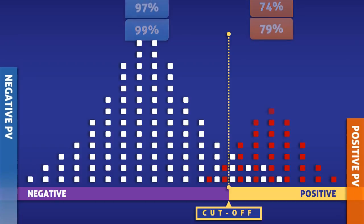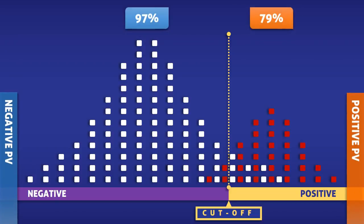So as we visualized in these animations, the predictive value can be affected by the cutoff level for a positive test, the amount of overlap between two groups, and the prevalence of the condition.